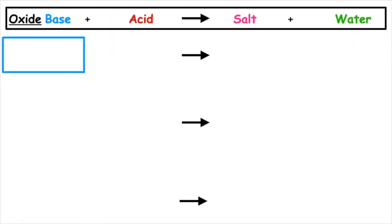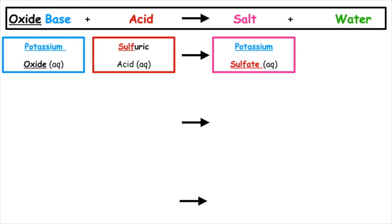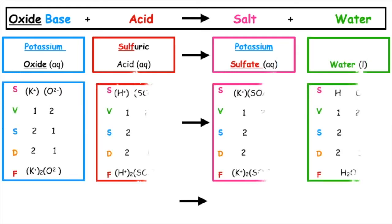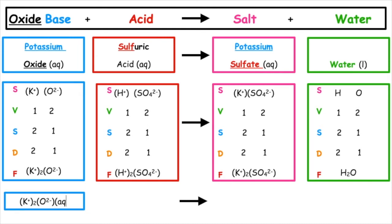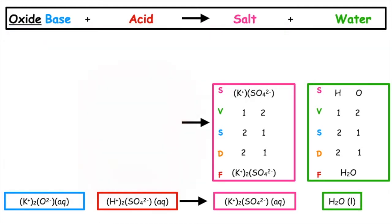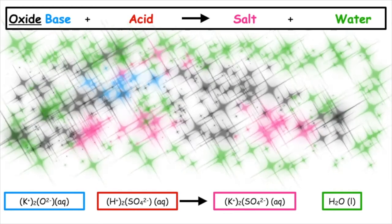So for us to be able to identify the spectator ion in this equation, we are going to read the equation backwards. We know that the spectator ion must be found on both sides of the equation and it must be in the aqueous state. The reason being is aqueous means it's in solution, and the word solution ends in ion.